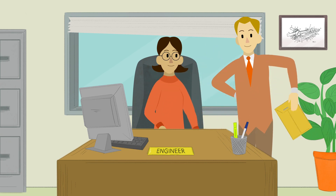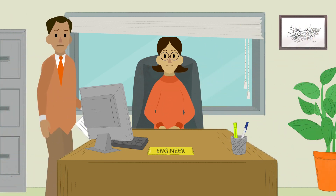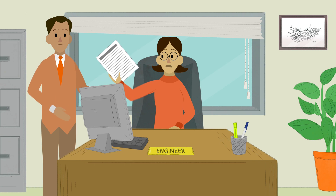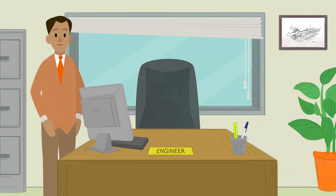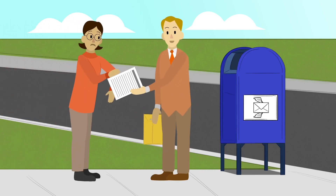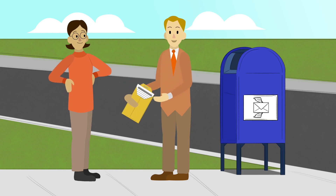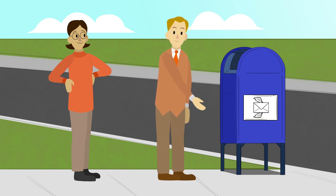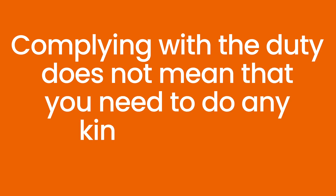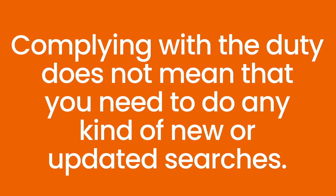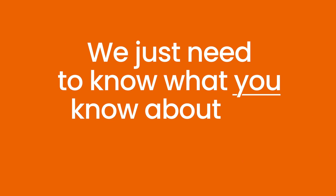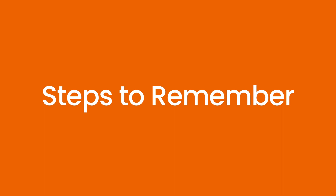So, in order to fulfill the duty of candor requirements, we still must gather all of the necessary information and documentation that could be related to the patent application, and then determine what non-cumulative material information needs to be sent to the USPTO. Importantly, complying with the duty does not mean that you need to do any kind of new or updated searches. We just need to know what you know about the patent application.